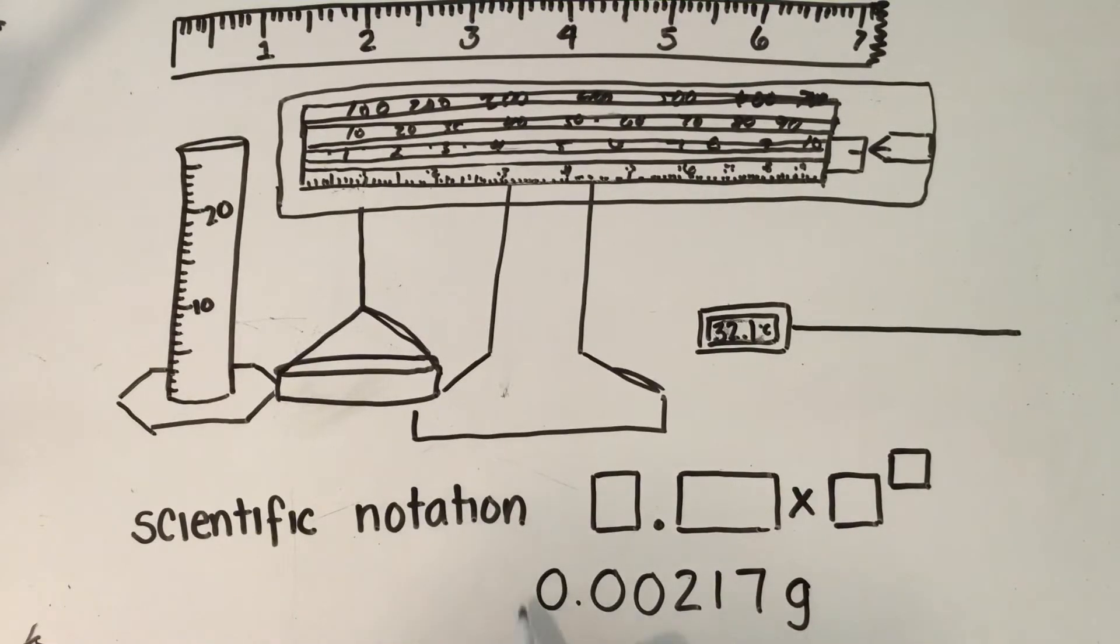Scientific notation gets rid of all not significant zeros. And to do that we move our decimal point over until we have one number in front of the decimal that's not a zero and we rewrite it.